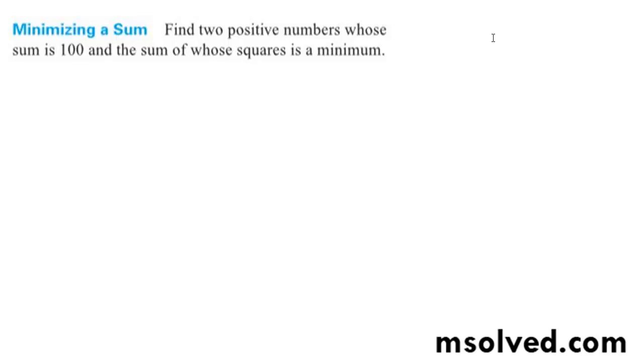We're going to find two numbers whose sum is 100, and the sum of their squares is a minimum.